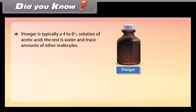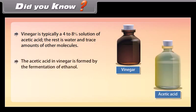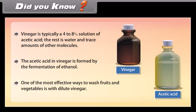Did you know? Vinegar is typically a 4 to 8 percent solution of acetic acid; the rest is water and trace amounts of other molecules. The acetic acid in vinegar is formed by the fermentation of ethanol. One of the most effective ways to wash fruits and vegetables is with dilute vinegar.